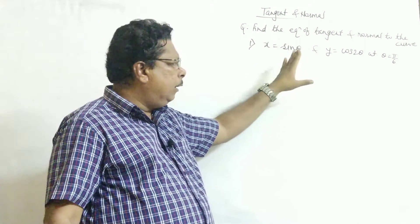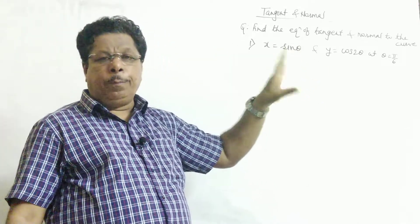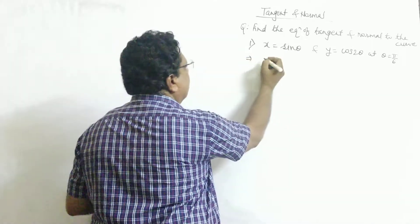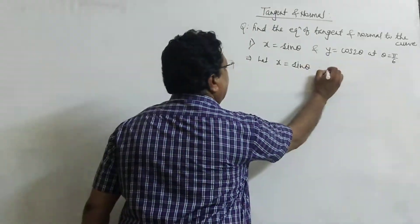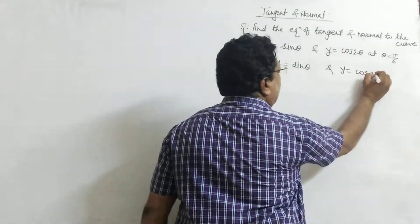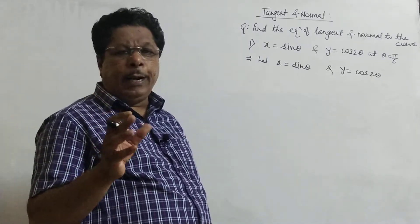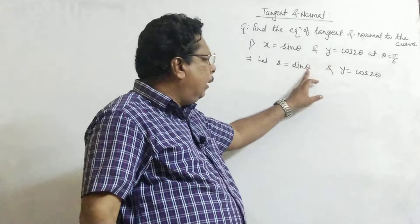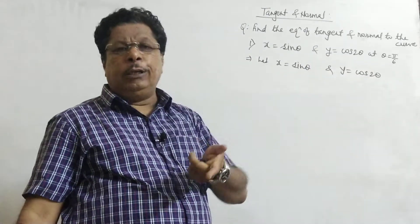The question is: x = sin θ, y = cos 2θ, and θ = π/6. Now first write down the equations: let x = sin θ and y = cos 2θ. We have to find the slope of the tangent first. To find the slope of tangent, differentiate both functions. Here theta is the parameter.